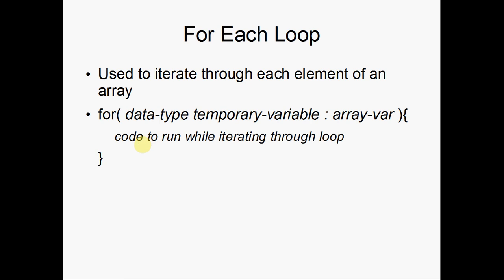Here is the for each loop, which is used to iterate through each element of an array and other list type data structures. The syntax has the code to run inside of the two braces.